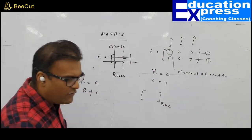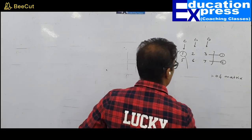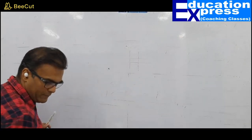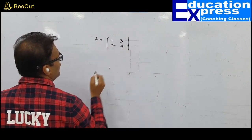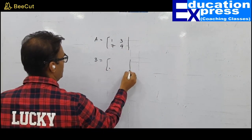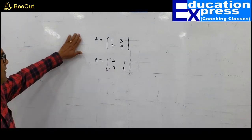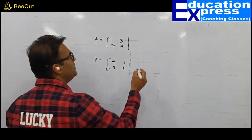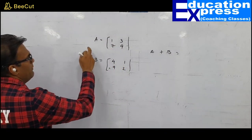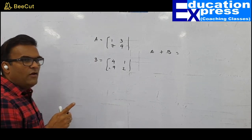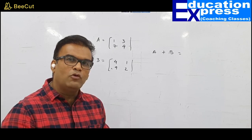Let us understand a few more properties of matrices. Suppose I have matrix A = [1, 3, 7, 4] and matrix B = [4, 1, 9, 2]. Can these two matrices be added? The answer is: two matrices can be added if and only if they are of the same order. Let us assess: matrix A is 2×2 and matrix B is also 2×2 — same order, so they can be added.